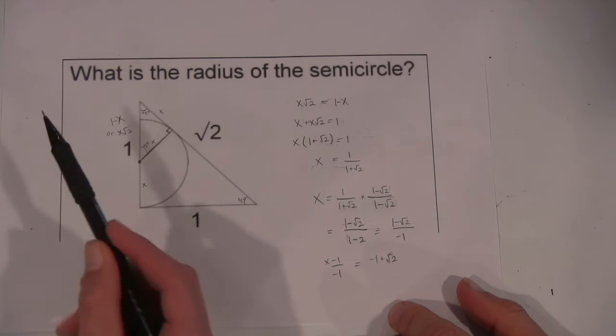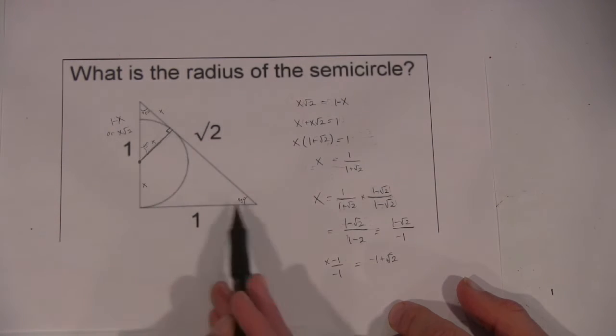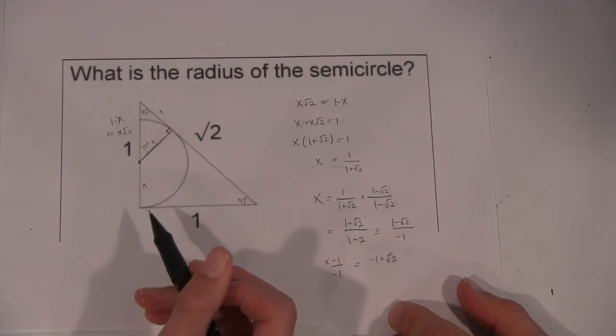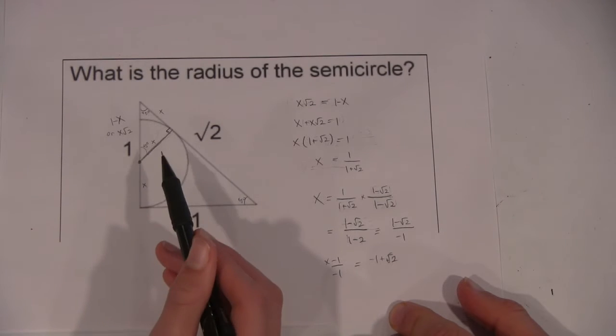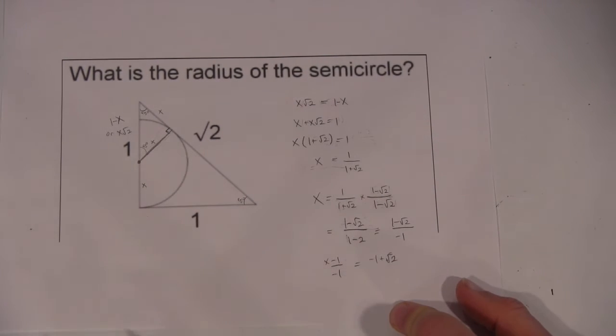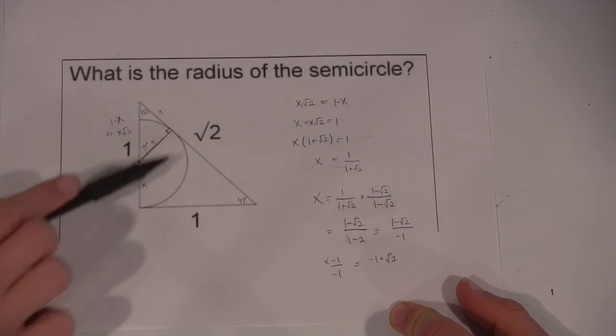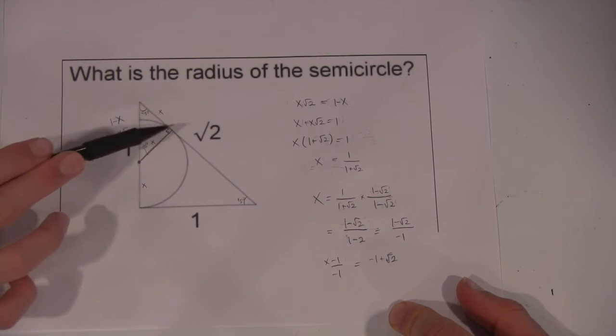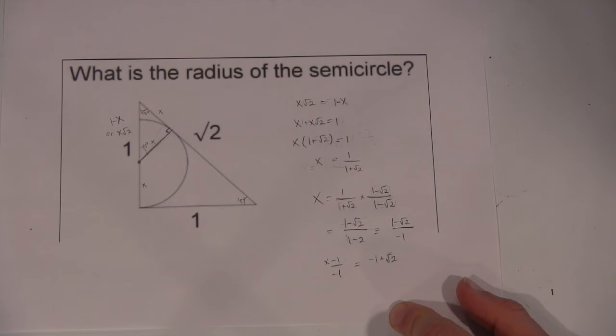Okay, so the problem is you have this 1-1-√2 right triangle, and it asks what is the radius of this semicircle that's drawn in here, and it looks like it's tangent to the hypotenuse. That's right, yeah, that's the thing about that semicircle, it's tangent to the hypotenuse.